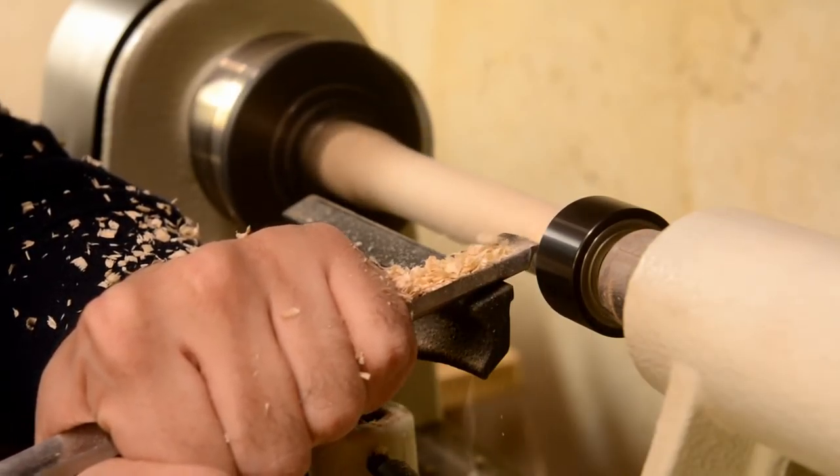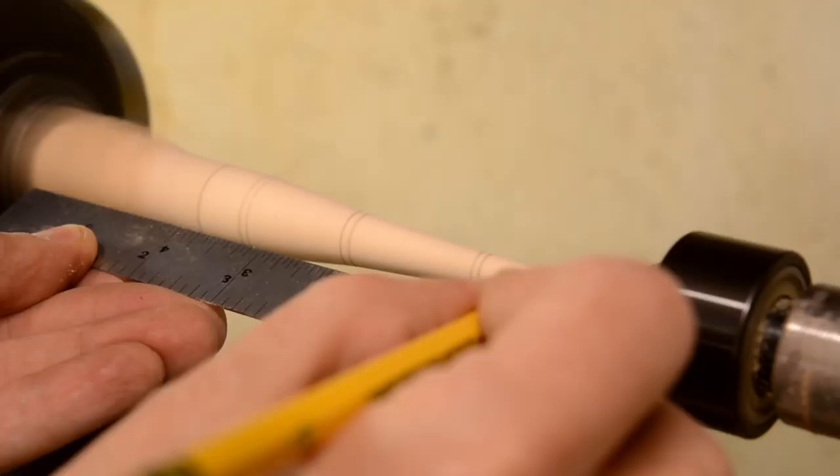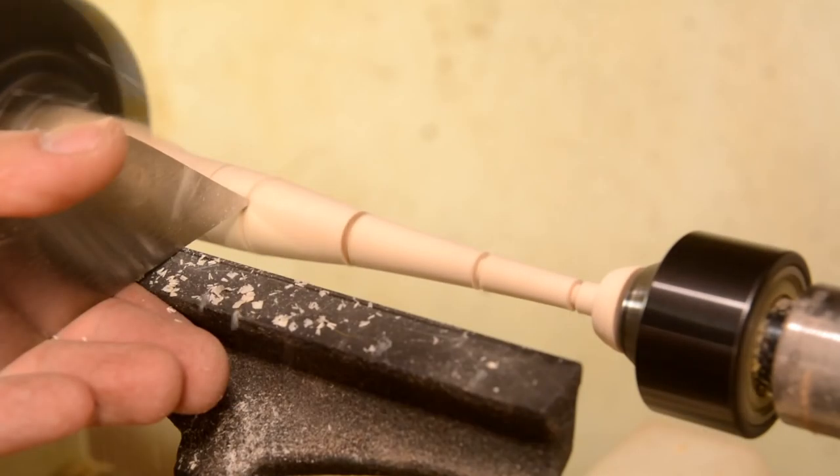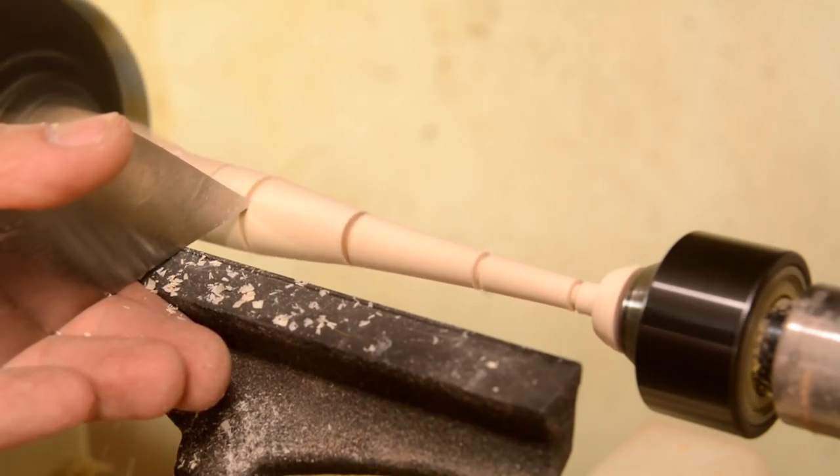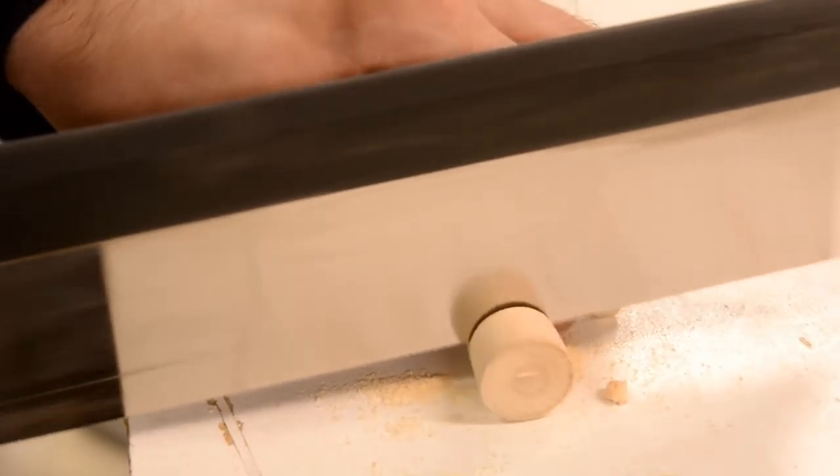I'm making the central column on the lathe because I want a nice taper to it. I'm not doing anything too fancy here, I'm just going to use my parting tool where each layer is going to be. And then I finish those cuts with a handsaw and sanding.